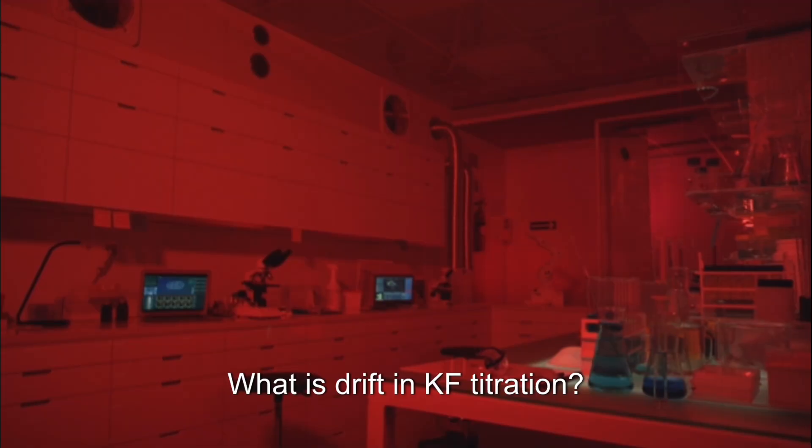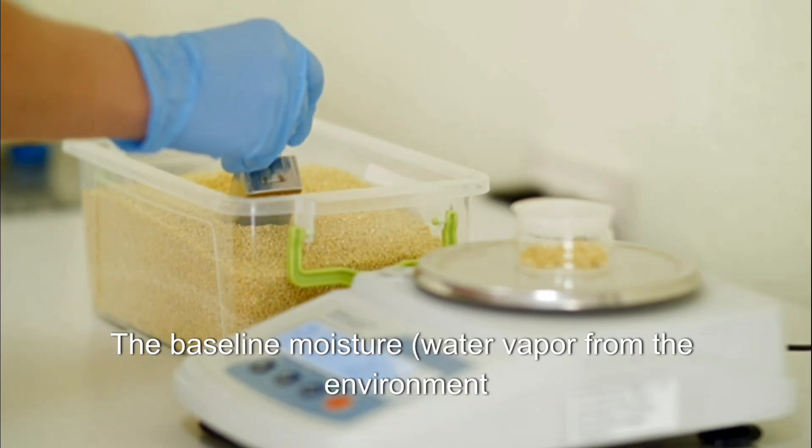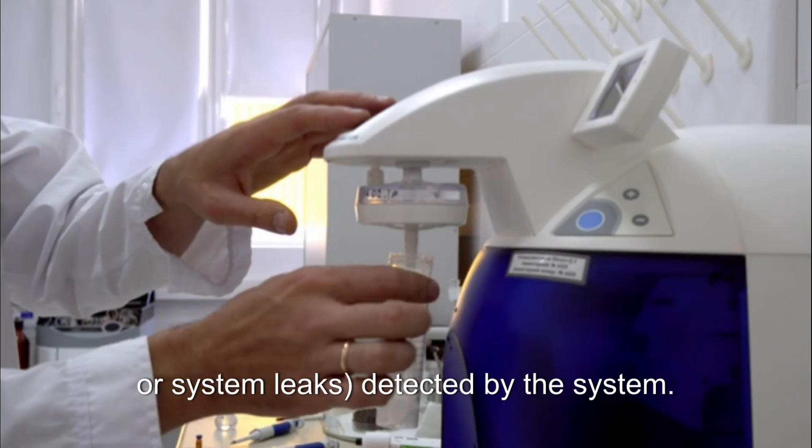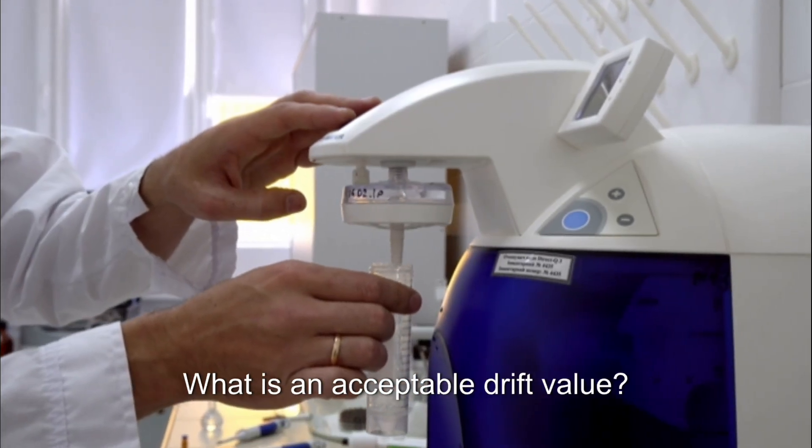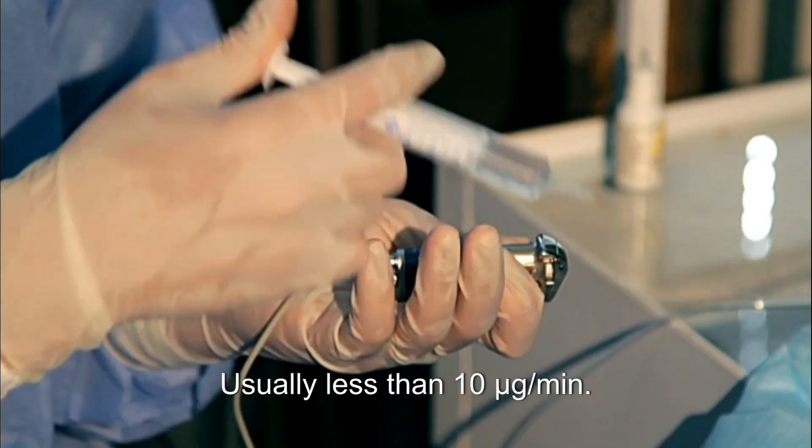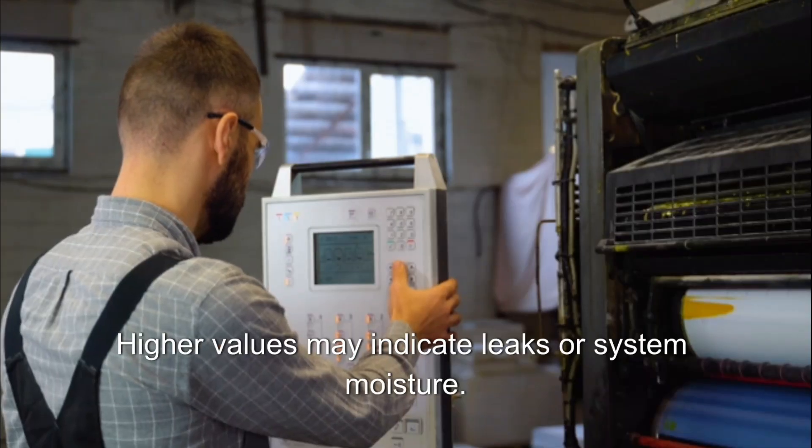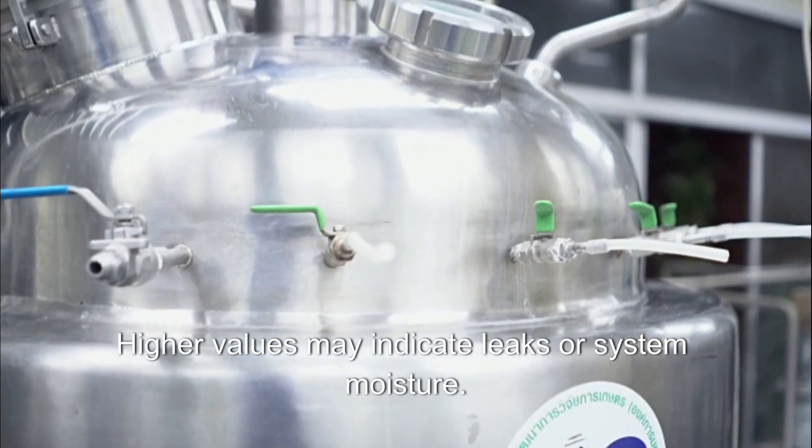What is drift in KF titration? The baseline moisture, water vapor from the environment or system leaks detected by the system. What is an acceptable drift value? Usually less than 10 micrograms per minute; higher values may indicate leaks or system moisture.